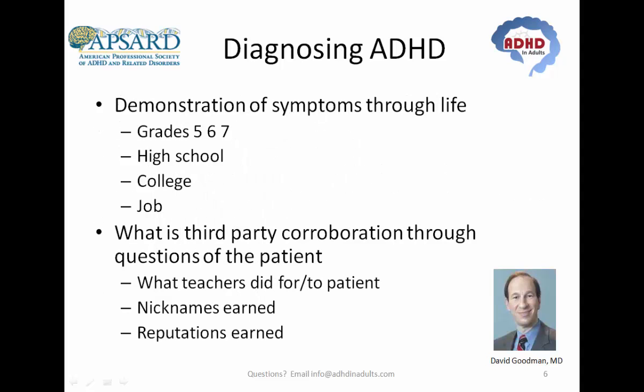I break the interview into two categories. One is to get the subjective list of symptoms from the patient developmentally — grades five, six, seven, then what would those symptoms look like in high school, in your first job, or in college? I track these symptoms. At each developmental phase, I ask whether there was an outside informant or observer who changed their behavior towards the patient. In school, I ask: did teachers move you to the front of the class because they thought you weren't paying attention? Did they move you to the back because you were too disruptive?